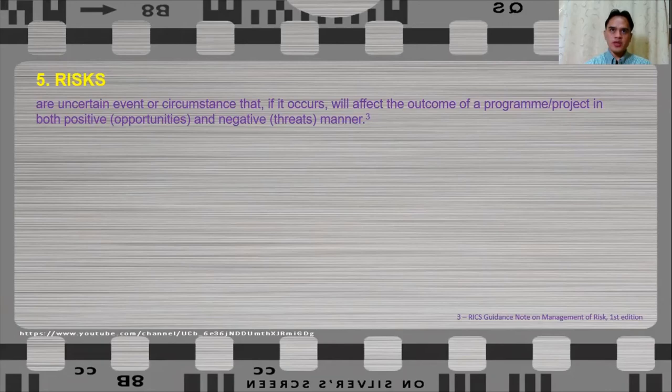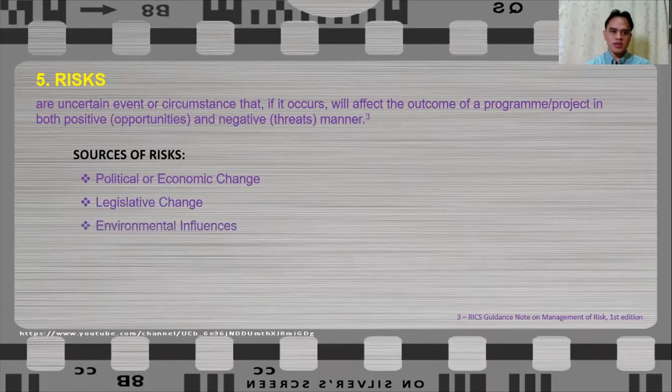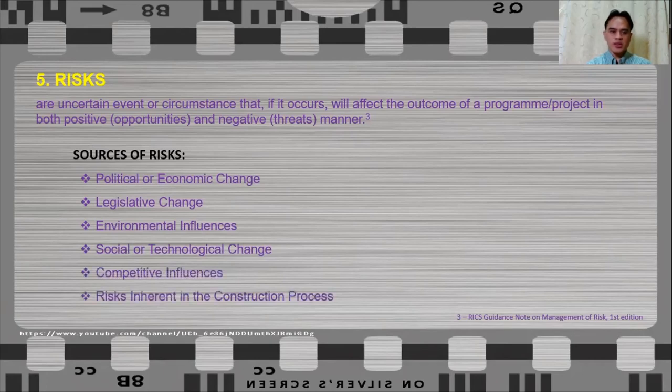And risk may appear in a number of different ways and it may occur at any point of the life of the project and many of which are outside the control of the client. Risks can come from the following sources: political or economic change, legislative change, environmental influences, social or technological change, competitive influences, and risks inherent in construction process.